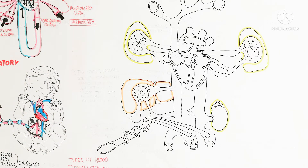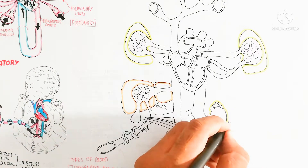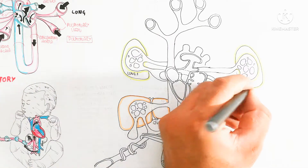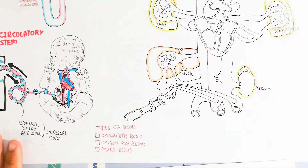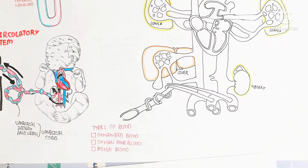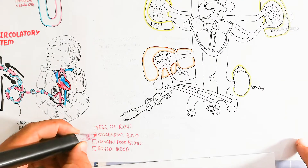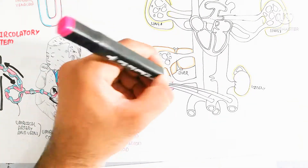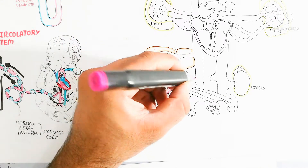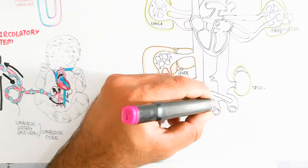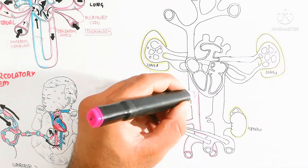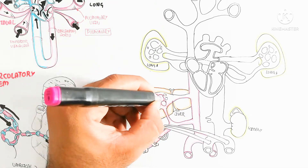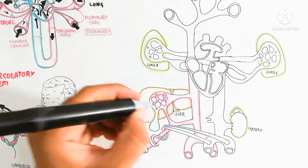Now I am drawing the structure of the fetal circulatory system, which contains the kidney, lung, liver, heart, and blood vessels — veins and arteries. The umbilical cord contains a vein and artery, known as the umbilical vein and umbilical artery. The umbilical artery collects oxygenated blood through the umbilical cord and moves it toward the fetus.